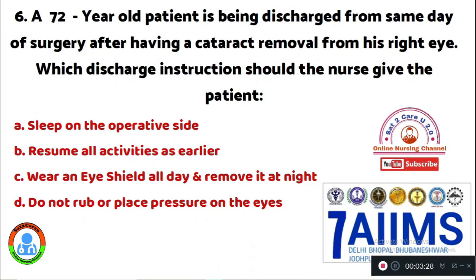Question 6: A 72-year-old patient is being discharged from same-day surgery after having a cataract removal from his right eye. Which discharge instruction should the nurse give? Option A: sleep on the operative side. Option B: resume all activities as earlier. Option C: wear an eye shield all day and remove it at night. Option D: do not rub or place pressure on the eyes. The correct discharge instruction is Option D: do not rub or place pressure on the operative eye.